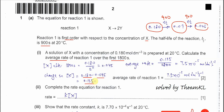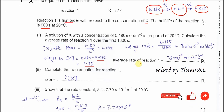So 0.135 mol per dm³ is the concentration change during this time. Divide by the total time taken to get 7.5 × 10⁻⁵ mol per dm³ per second. This is the average rate for the first 1,800 seconds.